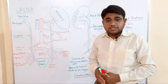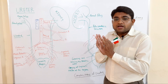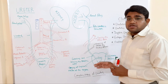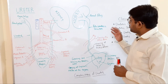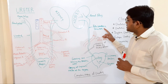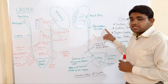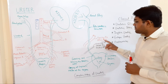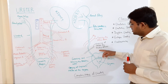The ureters do not have a uniform diameter — they are constricted at five different areas, which are the normal constrictions. The first constriction is at the pelvi-ureteric junction, where the renal pelvis continues as the ureter. The second constriction is where they cross the pelvic brim.